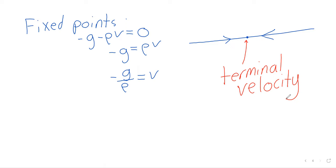This fixed point has a name: terminal velocity. If an object is allowed to fall long enough, its velocity will approach a fixed value called its terminal velocity. Terminal velocity is negative, which makes sense. If we throw an object up, its velocity is positive, then it starts to fall and velocity becomes negative, and if it falls long enough it approaches terminal velocity. This is another situation where we get information about a system without actually solving the differential equation. However, we do lose information by just looking at fixed points — questions like how long it takes to approach terminal velocity can't be answered this way.